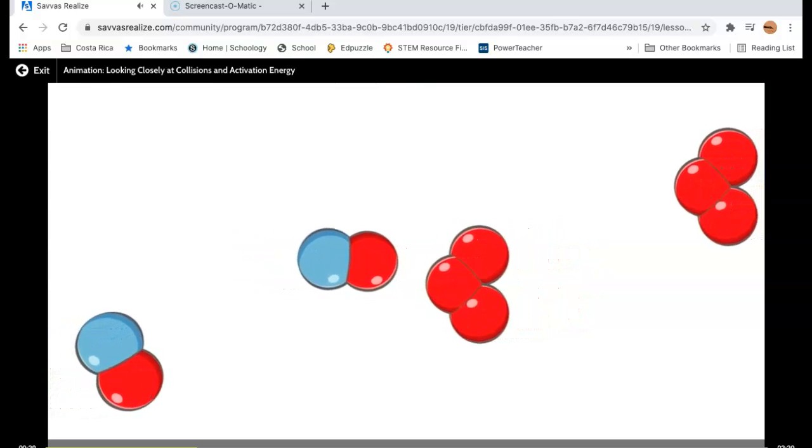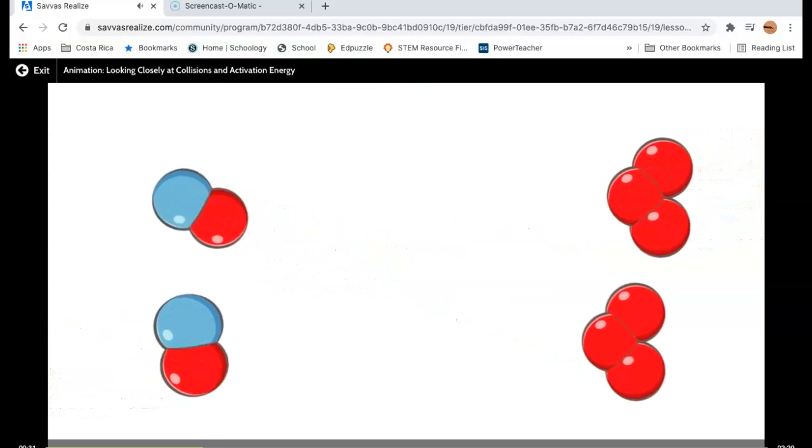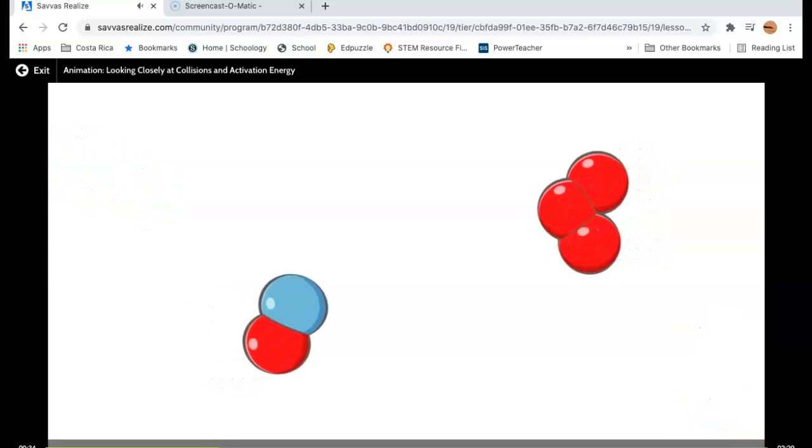If the molecules have the wrong orientation as they collide, then no reaction occurs because there is no way for the new bond to form.